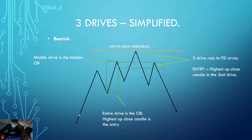The premise of this pattern is to take the entry off the middle drive which is the hidden order block. We're taking our entry off the highest up close candle in a bearish example for the price to then move lower. We have drive one retracement, drive two retracement, drive three. We like it preferably to be a very clear three drives into an area of higher time frame resistance. We are looking for the highest up close candle inside the middle drive which is a hidden order block - that is our entry and we're taking the market lower. Our stop goes above the high of the third drive.